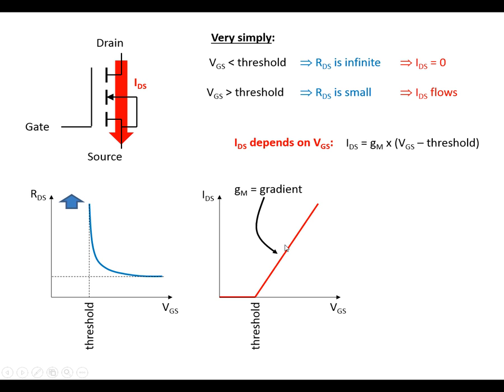The formula of this particular line, at least once we go above the threshold, is that the drain source current is equal to the transconductance multiplied by how many volts above the threshold the gate source voltage is.